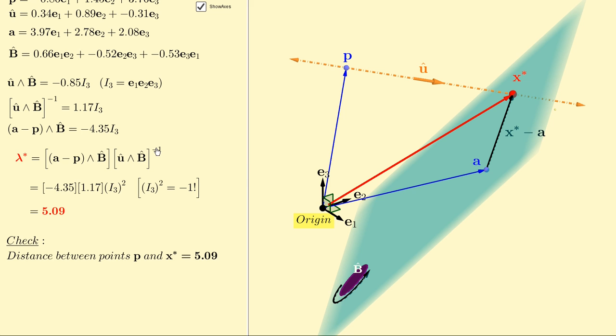u hat wedged with b hat, the multiplicative inverse is 1.17. So, we get negative 4.35 times 1.17 times the square of i3, and the square of i3 is negative 1, so the result here is 5.09.